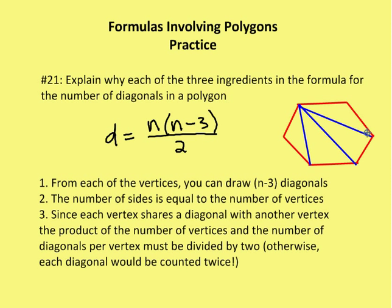Since each vertex shares a diagonal with another vertex, in this case vertex A and vertex E, I count AE as one diagonal and EA as another diagonal. So I have 3 diagonals per vertex and 6 vertices, giving me 18 different diagonals, but I've counted them twice. I have to divide by 2, otherwise each diagonal would be double counted.